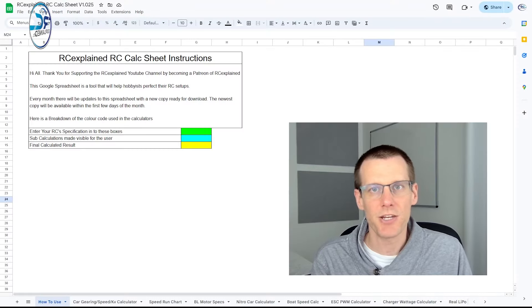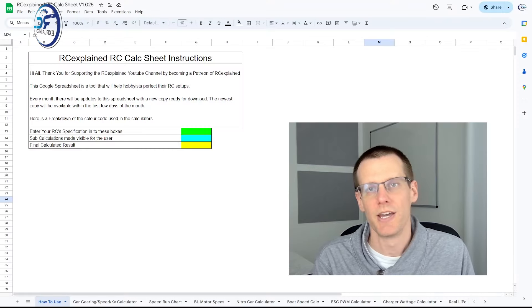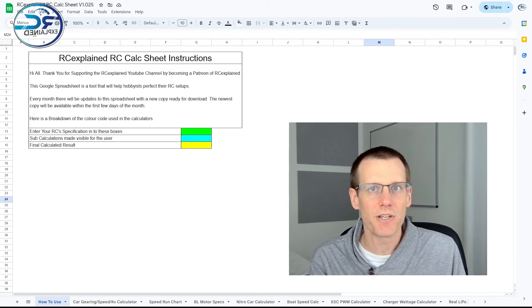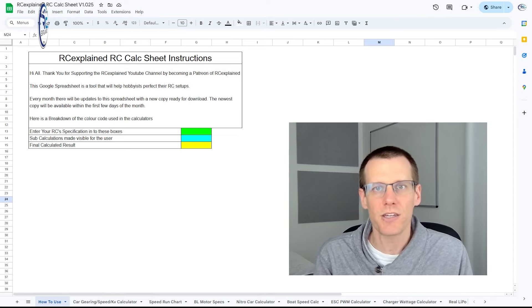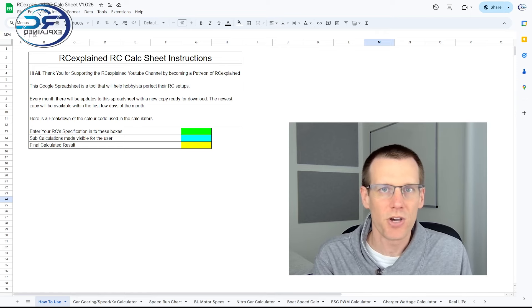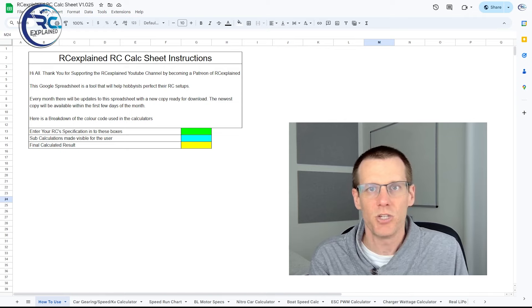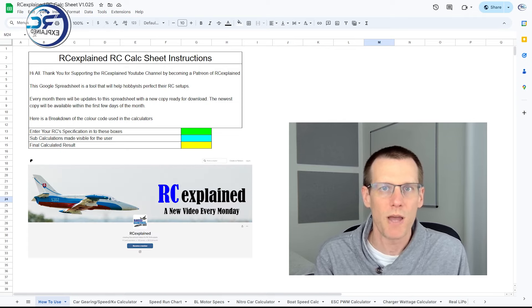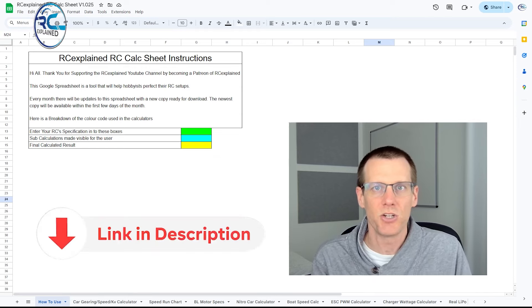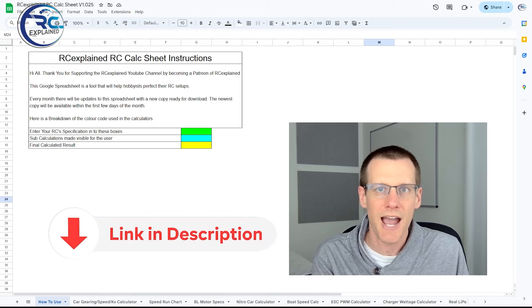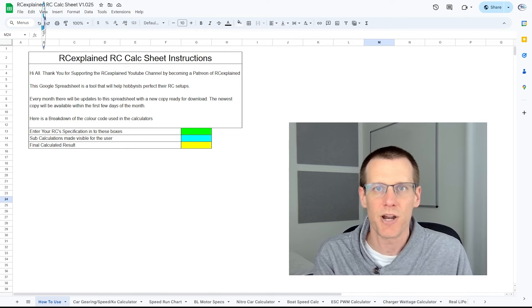Here's the RC Explained Patreon RC Calc Sheet. Now this is the one we're going to be using to take those IR values and drop it into the spreadsheet in order to calculate the real LiPo C rating. Now if you want to download a copy of this spreadsheet, you can do so by becoming a member on the RC Explained Patreon website. I'm going to leave a link in the description below.